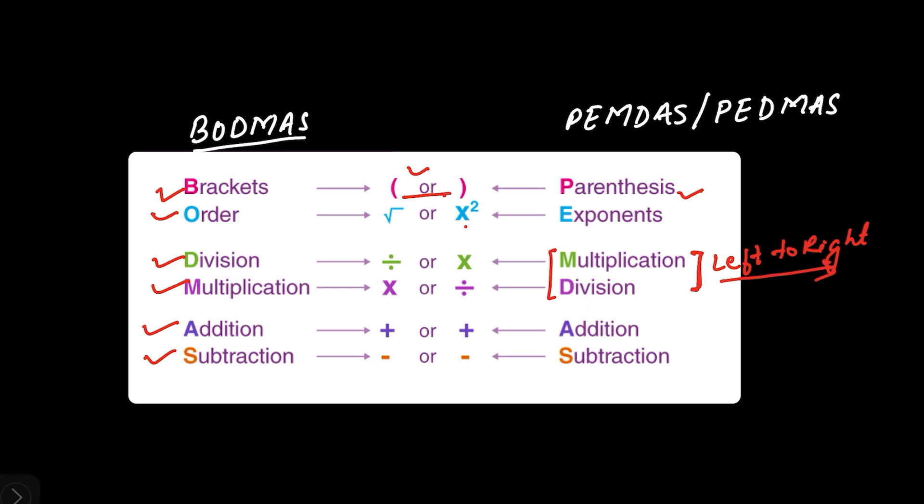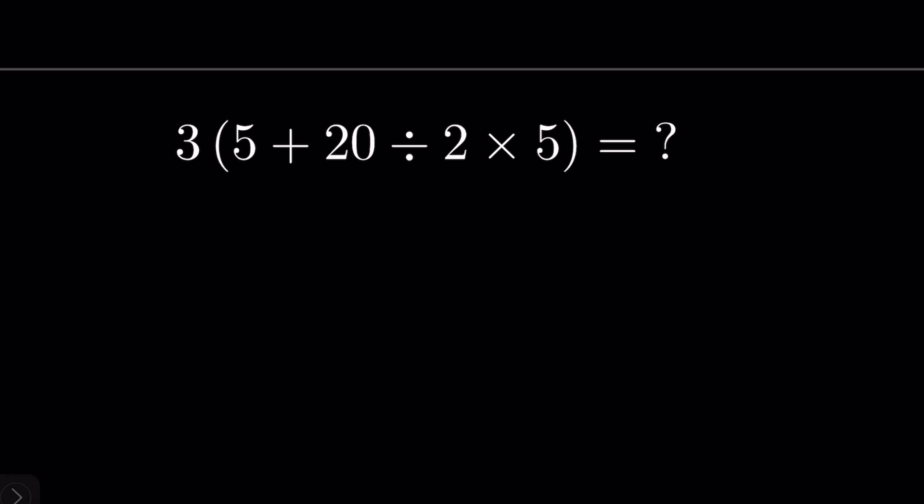You group them together and solve from left to right. Same goes with addition and subtraction. You solve them from left to right. So whether you follow BODMAS rule or BIDMAS rule, BIDMAS where I stands for indices, or you follow PEMDAS or PEDMAS rule where D for division, M for multiplication, the result will be the same.